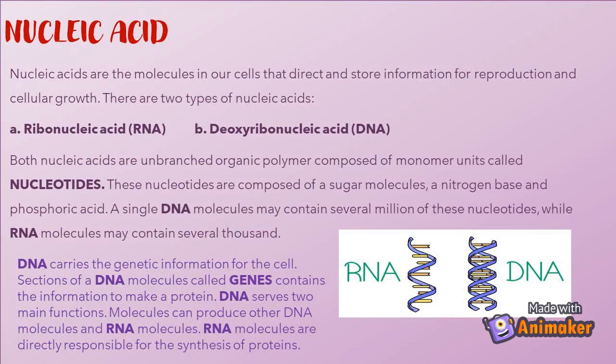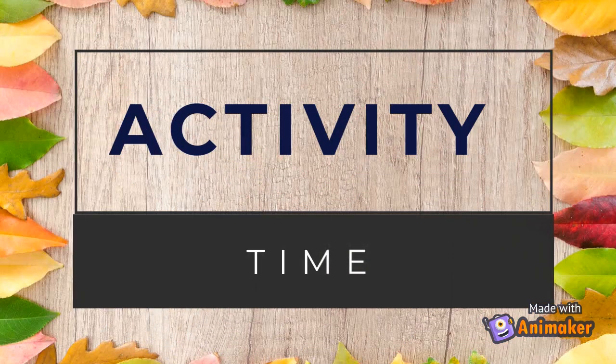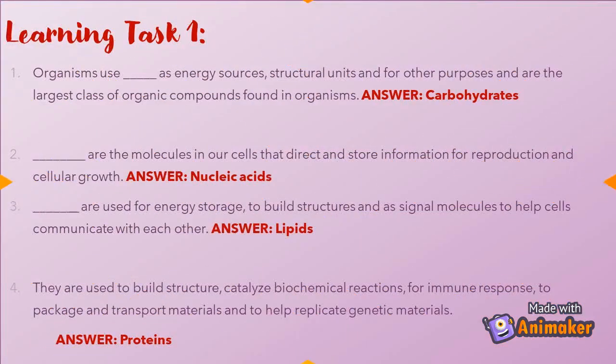A single DNA molecule may contain several million nucleotides, while RNA molecules may contain several thousand. DNA carries the genetic information for the cell — sections of a DNA molecule called genes contain the information needed to make a protein. DNA serves two main functions: it can produce other DNA molecules and RNA molecules. RNA molecules are directly responsible for the synthesis of proteins.